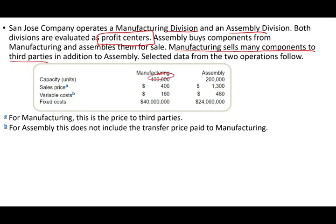We are given the following data. The manufacturing division has a capacity of 400,000 units, a selling price to outsiders of $400, variable cost of $160, and fixed cost of $40 million. The assembly division has a capacity of 200,000 units, a selling price of $1,300, and variable cost of $480.